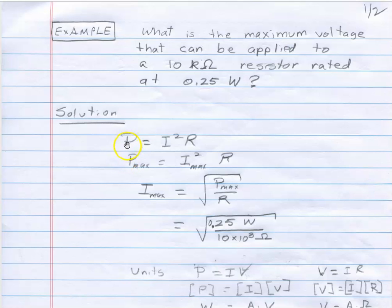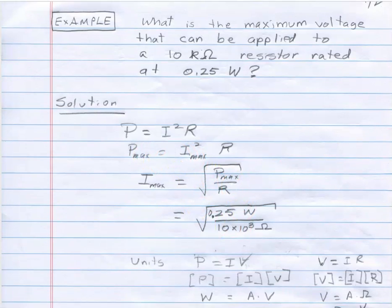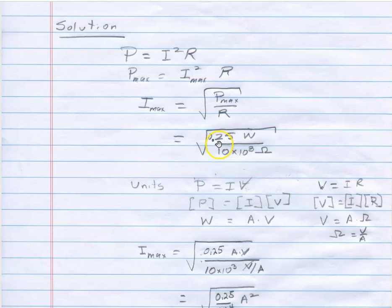We use the formula P equals I squared R in this case. I know the power, the maximum power that that resistor can take is 0.25 watts. So for that I'll get the maximum current. R is a positive constant. I can solve this equation for the maximum current and then plug in what all those values are. This was a 0.25 watt resistor and it was 10 kilo ohms.